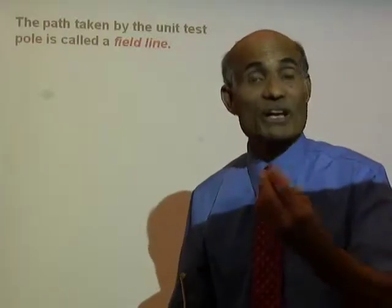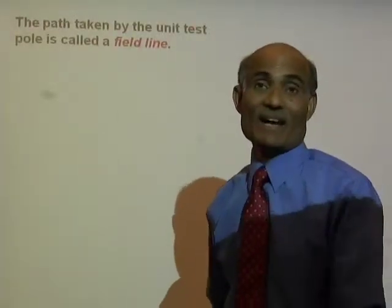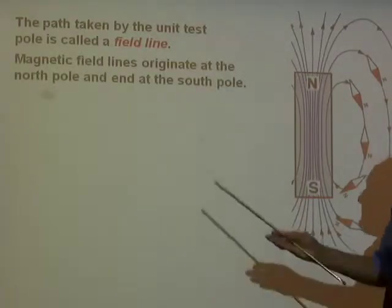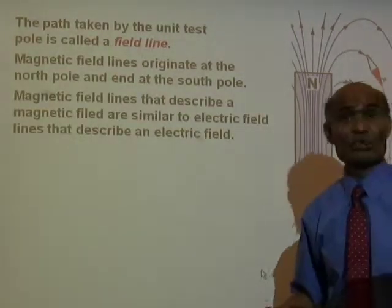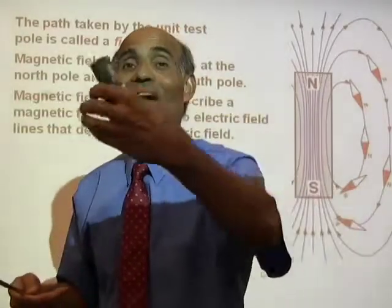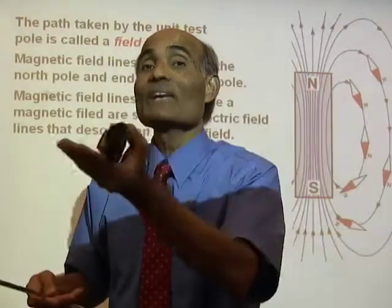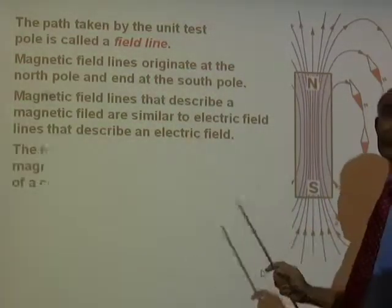The path taken by a test pole — a unit north pole — is called a field line. The magnetic field lines originate at the north pole and end at the south pole, which is similar to the electric field: the electric field originates at a positive charge and ends at a negative charge. A magnetic field originates at the north pole and ends at the south pole.